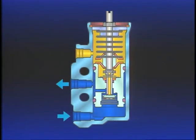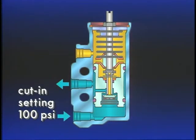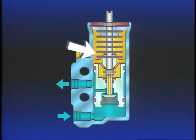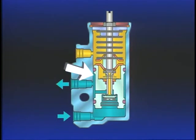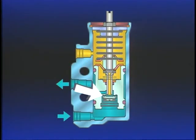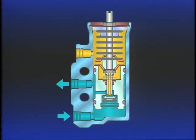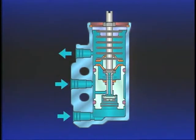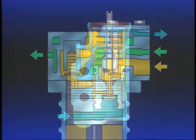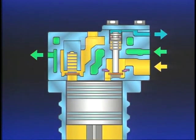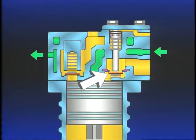When supply reservoir pressure drops to the cut-in pressure of the governor, typically 100 PSI, the governor pressure setting spring moves the piston, closing the inlet and opening the exhaust. Air in the compressor unloader mechanism flows back to the governor and is exhausted. With air pressure removed, springs move the unloader pistons, allowing the inlet valves to return to their seats and the compression of air resumes.